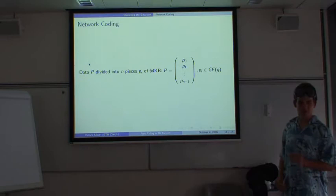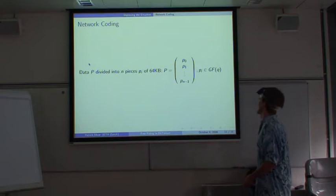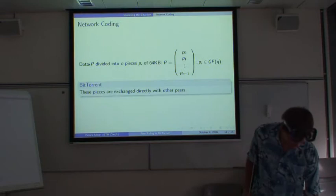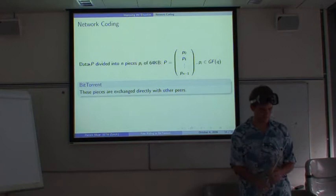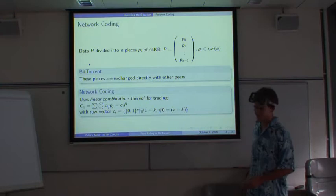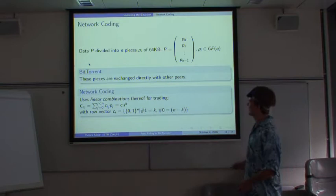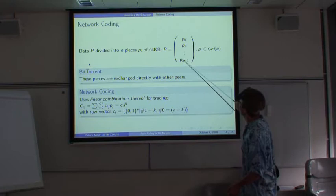This is a new principle for file sharing, for example. Where we divide our data p into n equally sized pieces of, say, 64 kilobytes. And we look at these small pieces as being an integer number in a Galois field. So what BitTorrent does, it exchanges these pieces directly with other peers. Like it gives one piece to one guy and gets another piece in return. What network coding does, it doesn't distribute the pieces, but it forms linear combinations of these pieces. Basically, we choose a coefficient vector which is all zero except for k positions where we put a one. So one linear combination usually is the addition of k random pieces from the data.